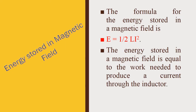Next, the energy stored in the magnetic field. The formula for energy stored in the magnetic field is given by E is equal to 1 by 2 L I squared. Here, L is the inductance and I is the current. The energy stored in the magnetic field is equal to the work needed to produce a current through the inductor.